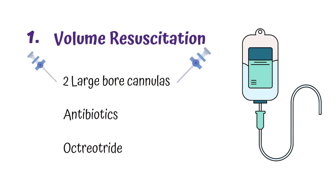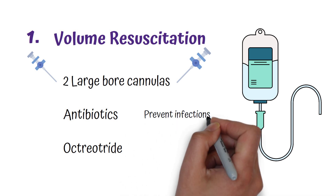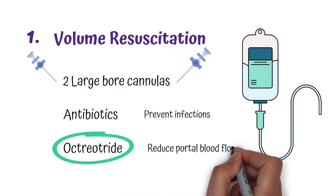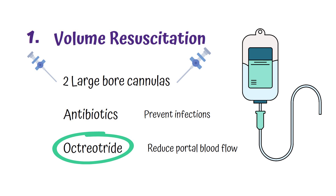Prophylactic antibiotics should be given to patients with cirrhosis to prevent infections. Somatostatin analogues like octreotide cause splanchnic vasoconstriction and reduce portal blood flow, thereby reducing bleeding. This patient has already received fluid resuscitation and antibiotics, therefore the next best step in management is to give octreotide.